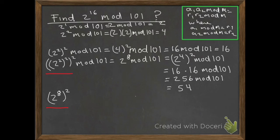Now we square again: (2^8)^2 mod 101 equals 2^8 times 2^8 mod 101. Here we notice we're multiplying two numbers, 2^8 times 2^8 mod 101, when we already know what 2^8 mod 101 equals.